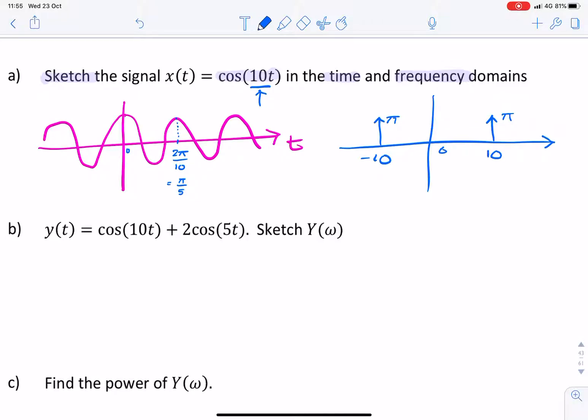So, that would be the spectrum, X(ω). And this would have been x(t).